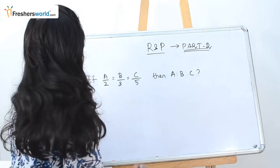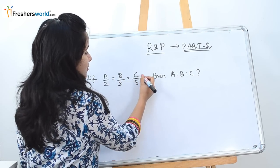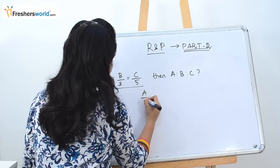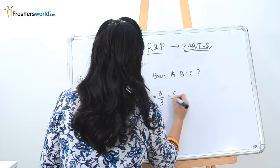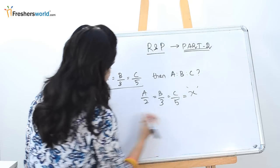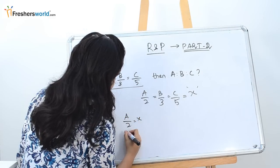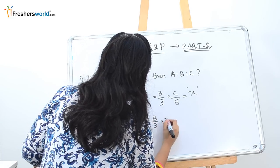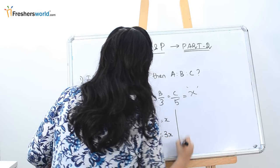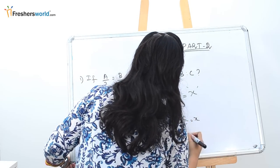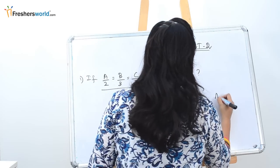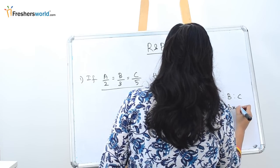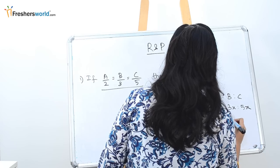The first question is: if A/2 = B/3 = C/5, then find A:B:C. What we do is equate A/2 = B/3 = C/5 to a variable x. So A/2 = x gives A = 2x. Similarly, B/3 = x gives B = 3x, and C/5 = x gives C = 5x. Therefore A:B:C is 2x:3x:5x, which simplifies to 2:3:5.